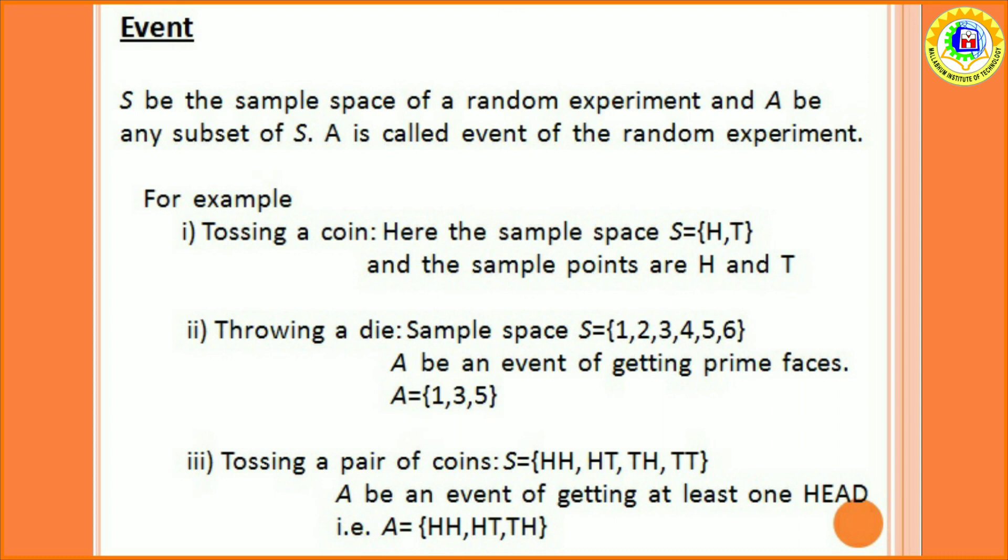Next example is tossing a pair of coins. The sample points are head head, head tail, tail head and tail tail. Suppose A be an event of getting at least one head. So, A is HH, HT, TH.